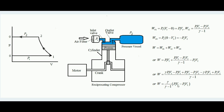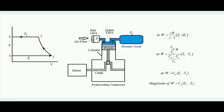Since pv = RT (ideal gas law), we substitute p1·v1 = R·T1 and p2·v2 = R·T2. Taking R common: W = γ/(γ − 1) × R × (T1 − T2). Substituting γ = cp/cv and noting that cp − cv = R, after simplification cv and R cancel, giving the final work done expression: W = cp × (T1 − T2).